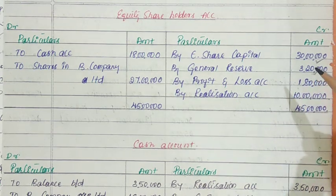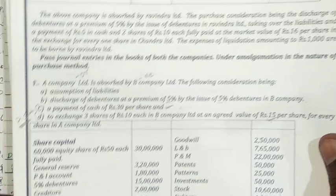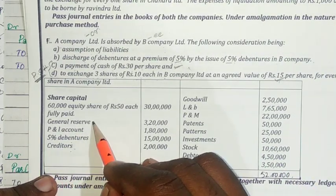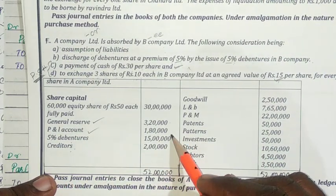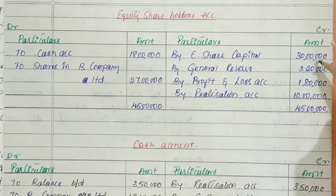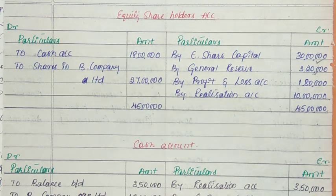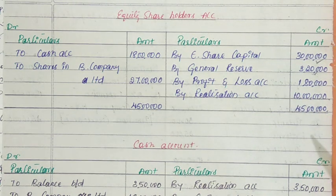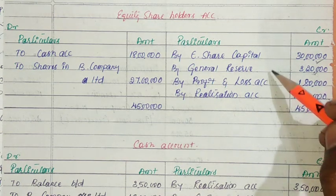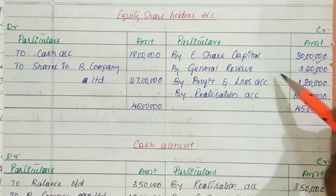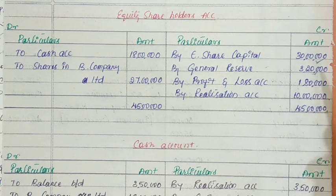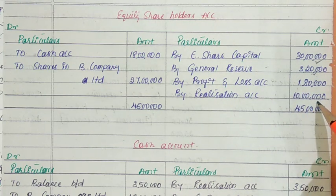Accumulated profits are credited in the equity shareholders' account. In this problem, the reserves given are general reserve of 3,20,000 and profit and loss account of 1,80,000 — totaling 2,80,000 — and these need to be credited. Statutory reserves, if present, are maintained in the new company with a separate entry. All the remaining accumulated reserves are transferred to equity shareholders' account.